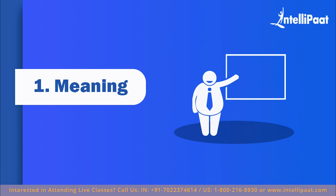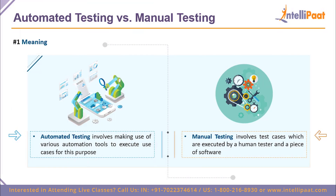The first comparison point is meaning. Automated testing involves using various automation tools that execute all the use cases for us with as little human interference as possible. Manual testing involves having test cases executed by a human tester on a piece of software under consideration.